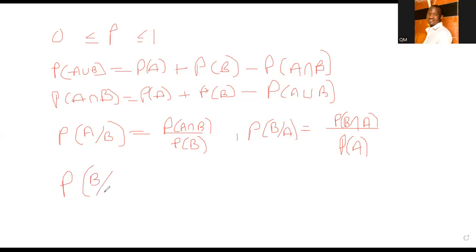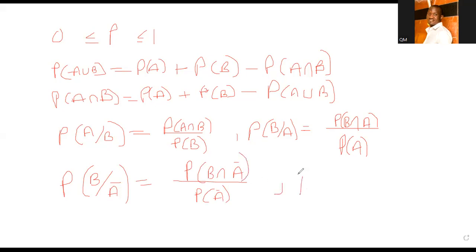Suppose I asked you to find the probability of A given A complement — who can expand this for us? What comes down there is A complement, and here we're going to have the probability of B intersection A complement. A complement is what is outside A.